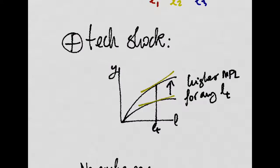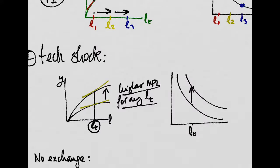If there is a technology shock, then there will be a higher MPL for the same unit of labor. That would be just a shift in the schedule of the MPL.